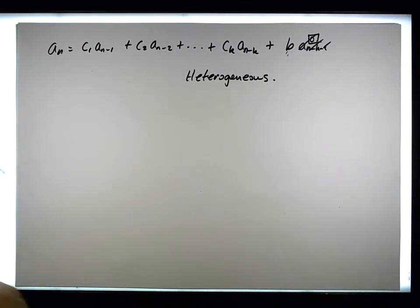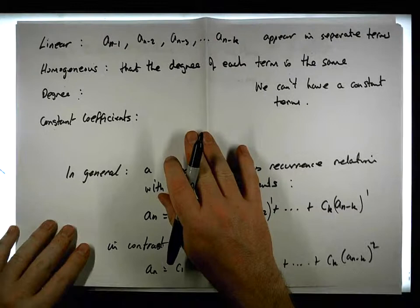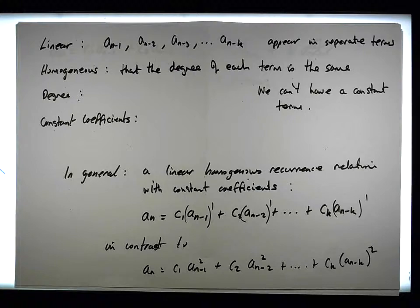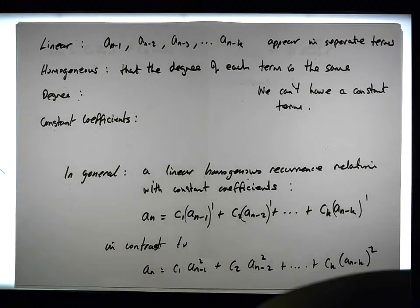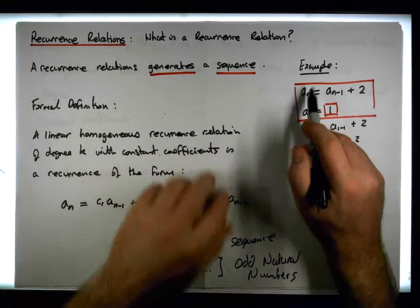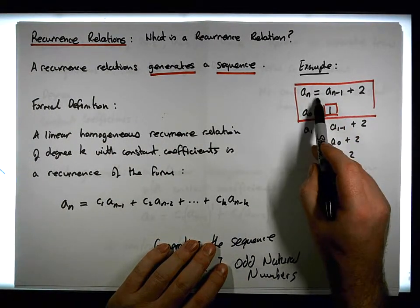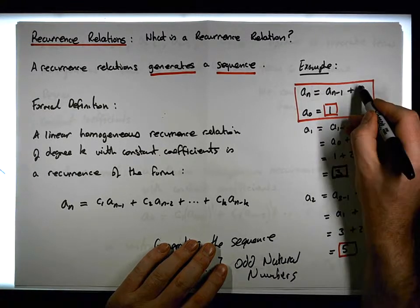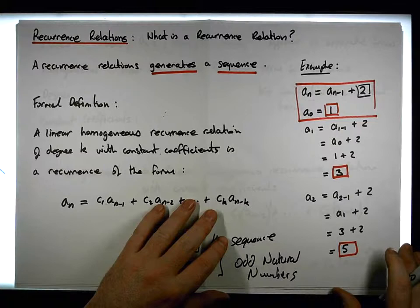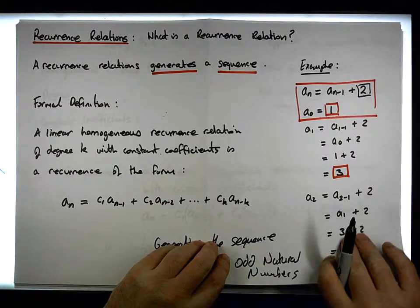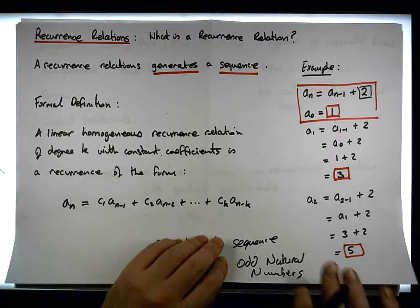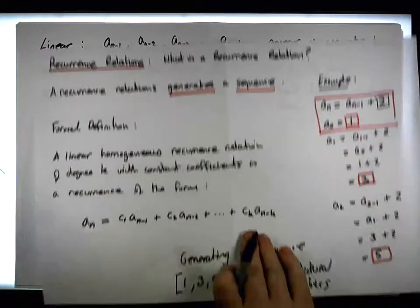And then the final thing that we're interested, well, not the final thing, the degree. Sorry, back to our examples. So back to our examples here, we have the first example, which was the nth term defined in terms of the previous one plus 2. So this is not homogeneous because we have a constant term here. That's not homogeneous, it is linear. It is linear, but it's definitely not homogeneous.